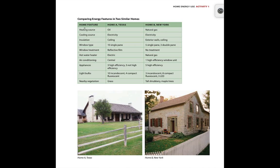The features you're looking at include the heating source, cooling source, insulation, window type, and other features over here. You may have to ask your parents about your heating source — whether it's oil, natural gas, or electric — same for your cooling source, the insulation you may have, the window type, or any of these other features.